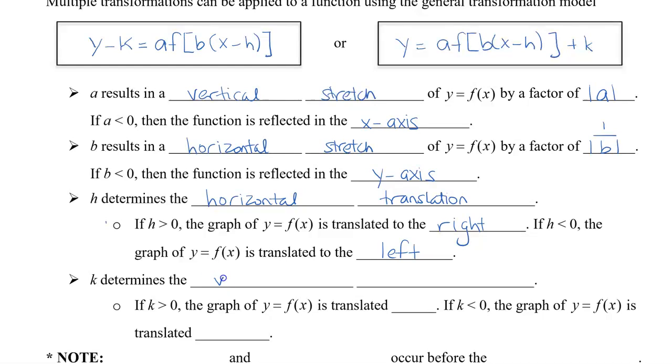k determines the vertical translation. And if k is a positive number the graph is going to be translated up, and if k is less than zero the graph is going to be translated down.